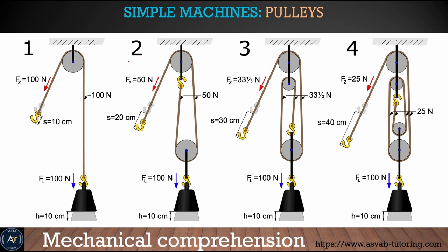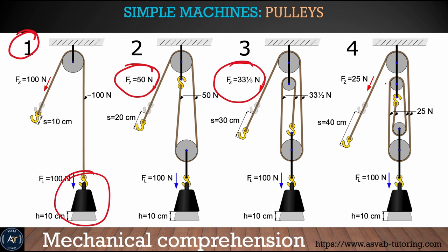Here is the mechanical advantage of different types of pulleys. With a single pulley (mechanical advantage of 1), you need 100 pounds to lift a 100-pound load. With two pulleys, you need 50 pounds. With three pulleys, about 33 and one-third pounds. With four pulleys, you only need 25 pounds to lift 100 pounds. That shows how the pulley system makes your life easier.